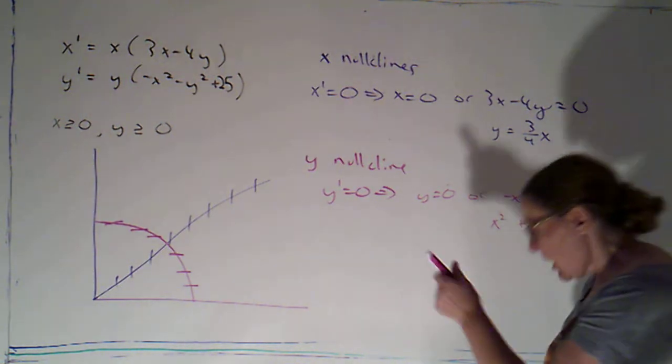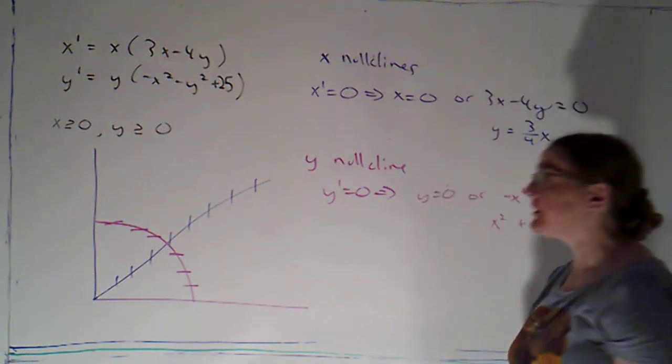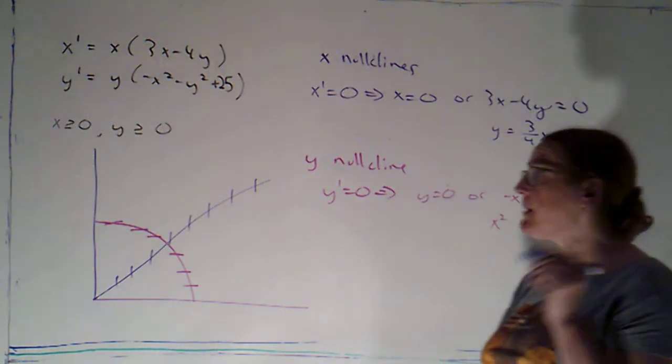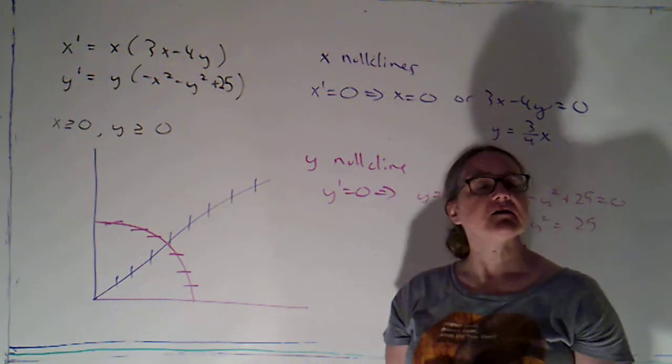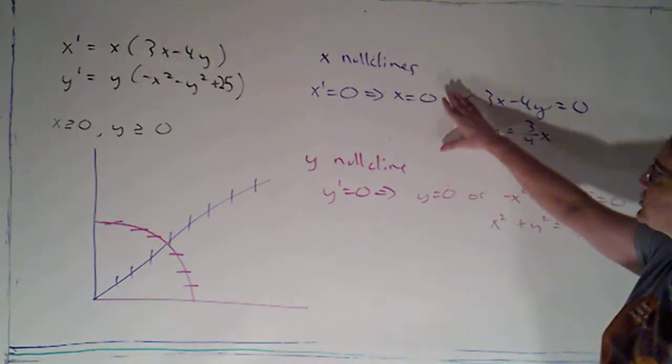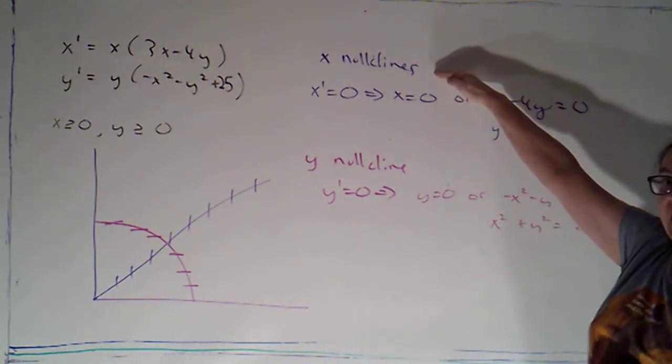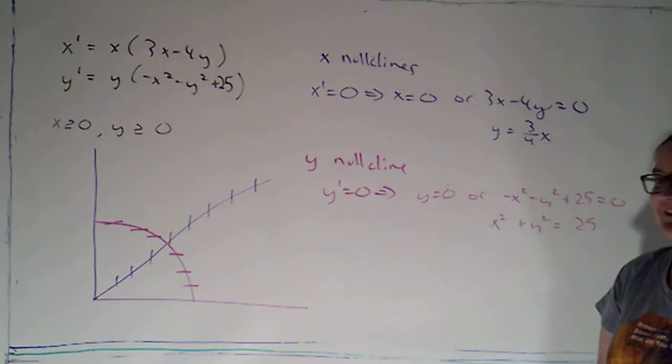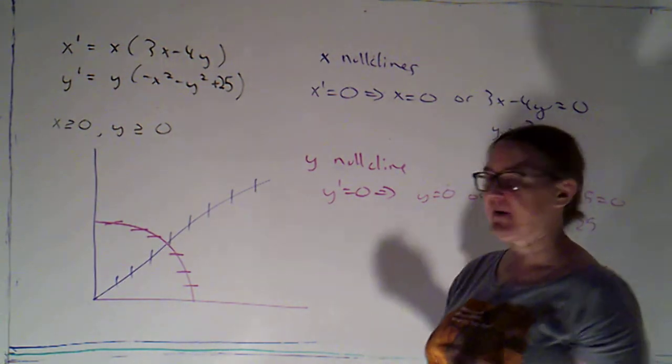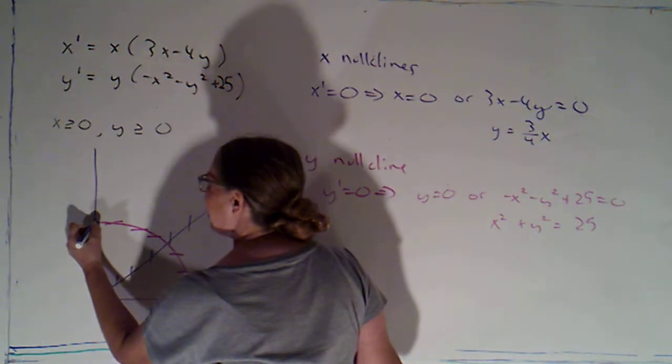So now, I can see from here where my equilibrium points are. Because remember, at an equilibrium point, both x prime and y prime are zero. So that has to occur when I've got the intersection of an x nullcline and a y nullcline. With the color coding, it's easy to spot. That's where purple meets pink. So we've got this point right here.